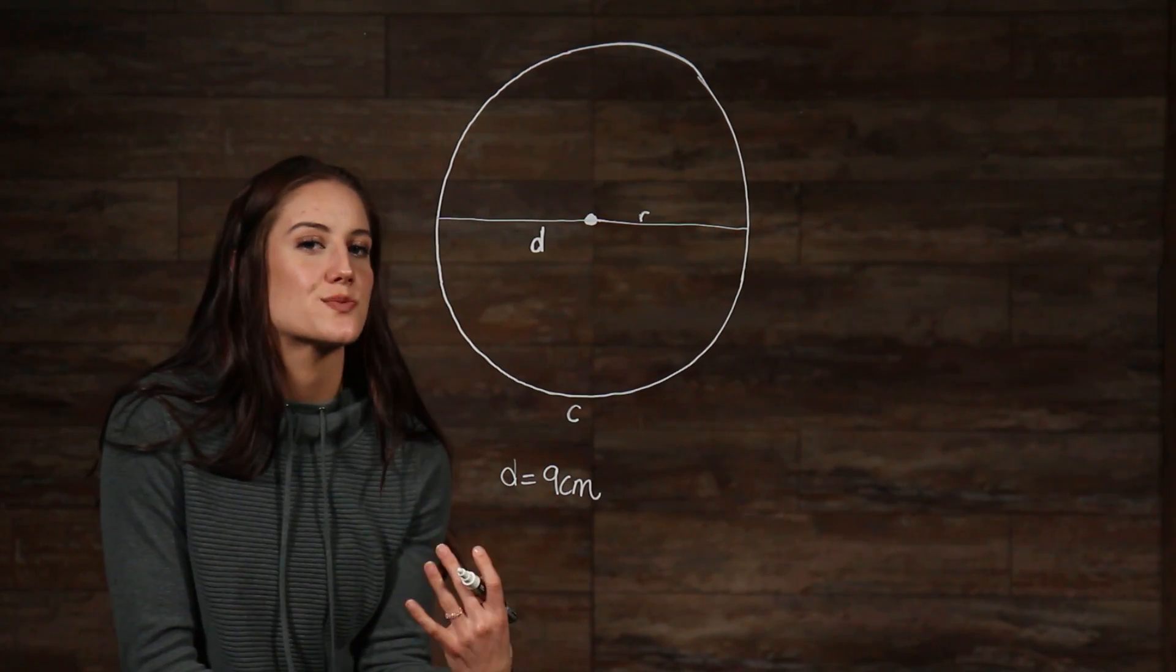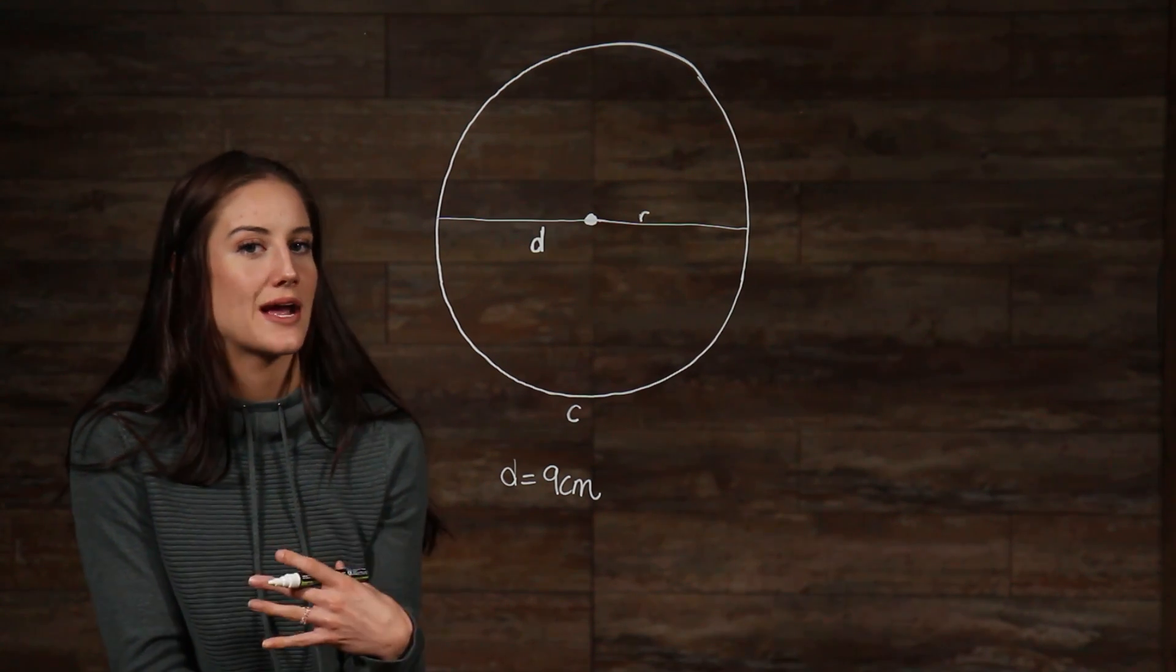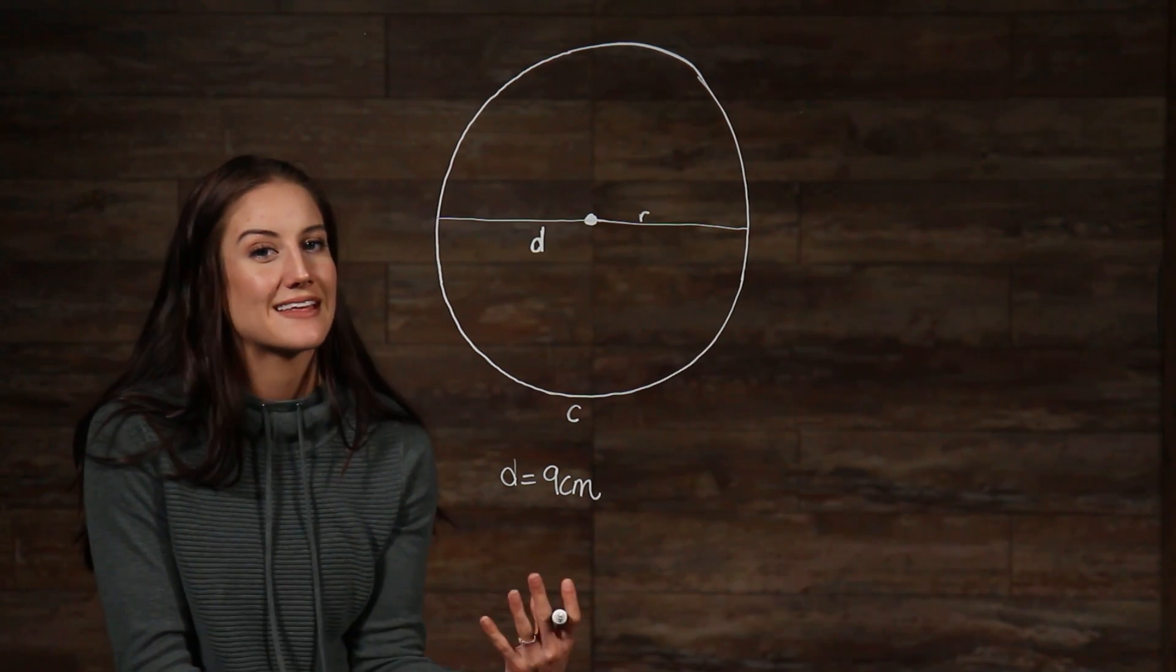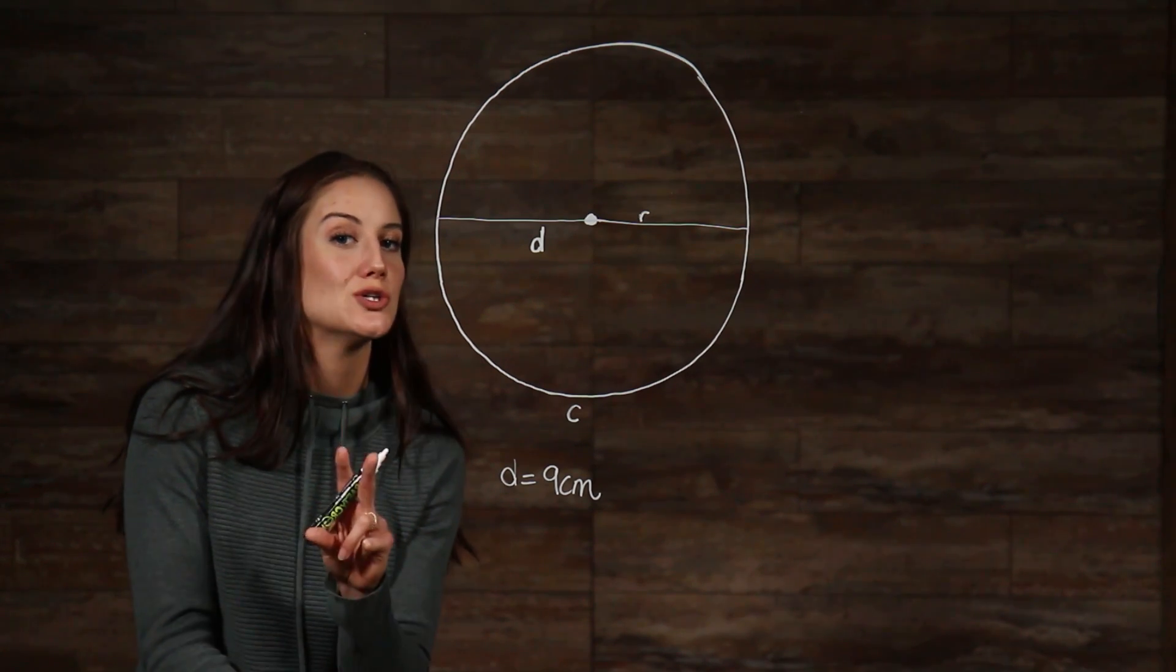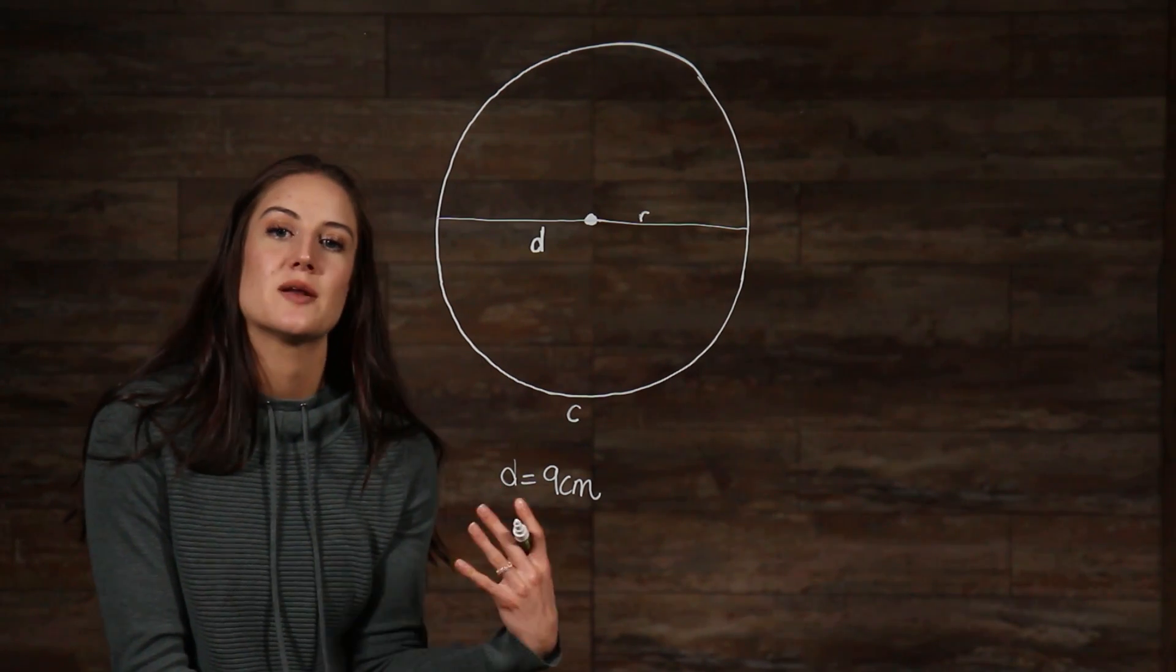Well, we know that if our radius runs from the midpoint to the outer edge, then all we have to do to find the length of our radius would be to divide the length of the diameter by 2. So when we take 9 and divide it by 2, we get a radius length of 4.5 cm.